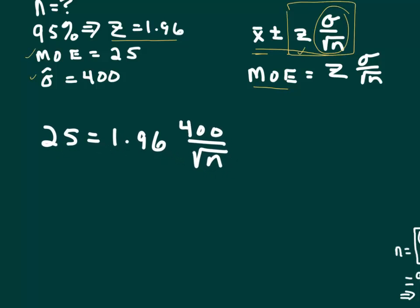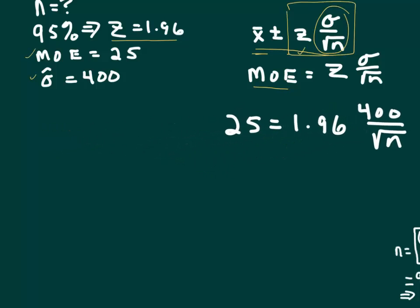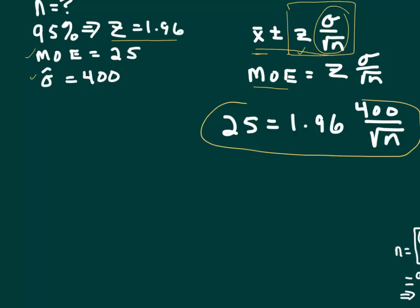So now I'm just plugging into this equation. The margin of error is 25, 1.96 is our z value, estimate of the standard deviation is 400, and so I have that. The only thing that I don't have is n, which is what I want to obtain in the problem, so I'm going to take this equation and just solve for n.